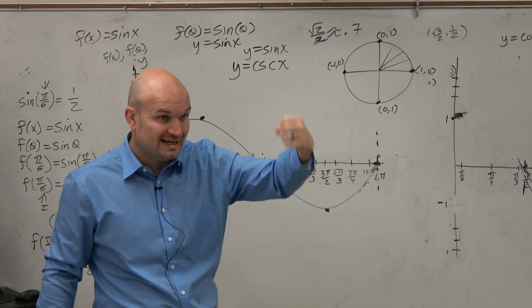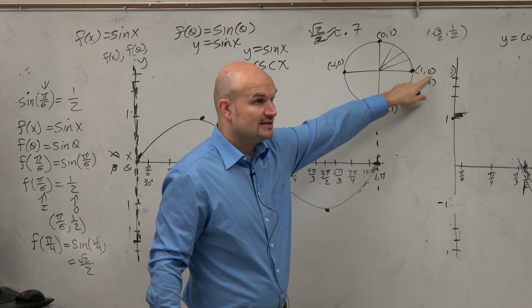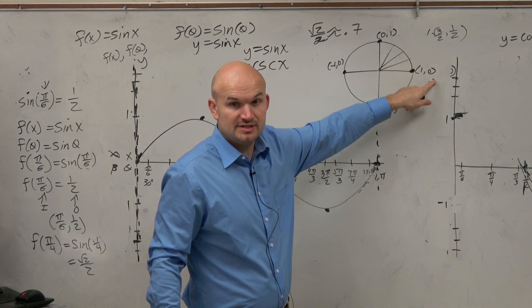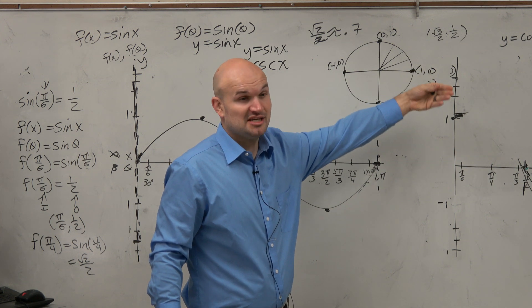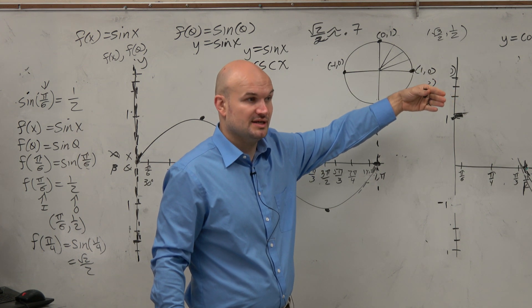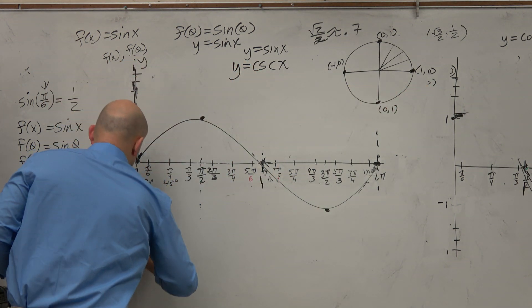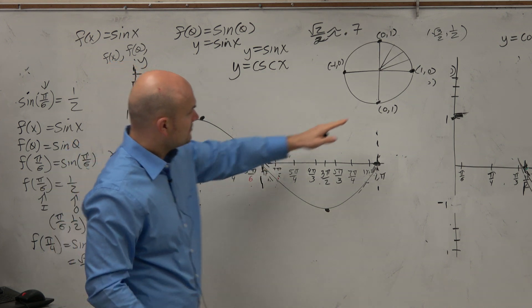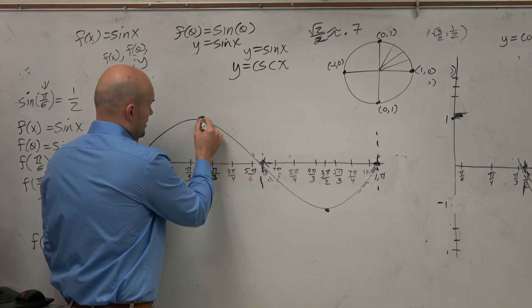Remember, sine is 1 over y. So if I look at 1 over the y coordinate at the angle 0, I'm at 1 over 0, which is undefined. Last class period, we graphed undefined values using an asymptote. So nice little asymptote here. When we go to π/2, 1 over 1 is just 1.